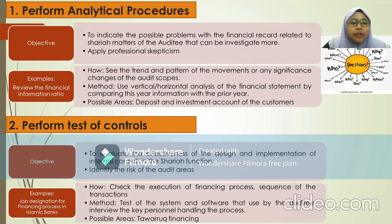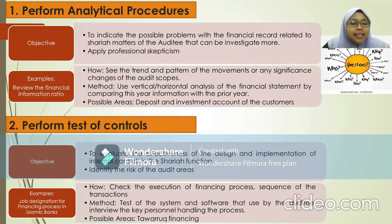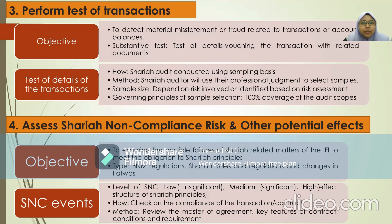The second process is to perform the test of control. The objective is to evaluate the effectiveness of the design and implementation of internal controls in the Sharia function, and to identify the risk of audit areas. For example, the Sharia auditor can check on the job designation for the financing process in Islamic banks. The third process is to perform the test of transaction. The objective is to detect any material misstatement or fraud related to transaction or account balances. Usually, we conduct a substantive test on the test of detail, matching the transaction with related documents to check accuracy and the existence of the transaction.